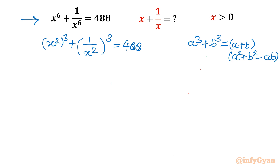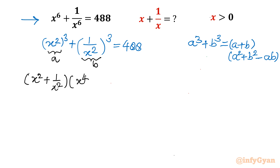Applying the identity, consider a = x² and b = 1/x². In the first bracket I write a + b, which is x² + 1/x². In the second bracket, a² is x⁴, b² is 1/x⁴, and minus ab gives minus 1, since x² · 1/x² = 1. So we get (x² + 1/x²)(x⁴ + 1/x⁴ − 1) = 488.